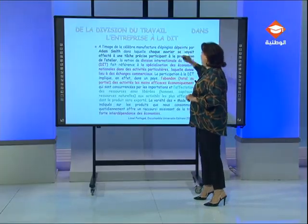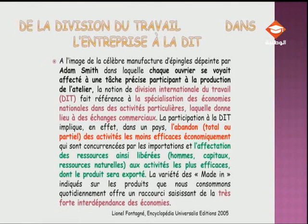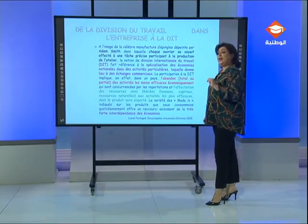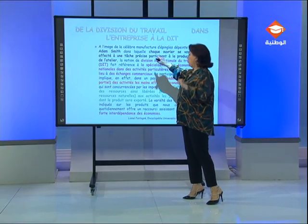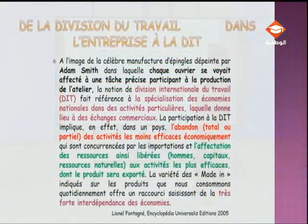Cette notion de DIT, même si on parle toujours de division et de travail, n'est en aucun cas la notion de division du travail d'Adam Smith que vous avez vue dans le chapitre « travail facteur de production » du programme de troisième année. Il s'agit là plutôt d'une organisation du travail selon laquelle chaque ouvrier va avoir une tâche précise dans le cycle de production de l'atelier — c'est la division du travail d'Adam Smith au sein de l'entreprise — tandis qu'ici, il s'agit de la division internationale du travail.